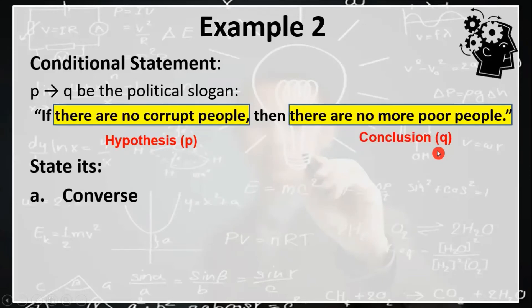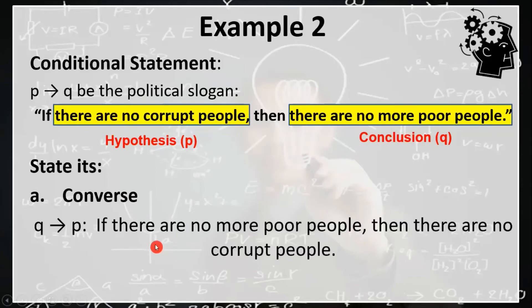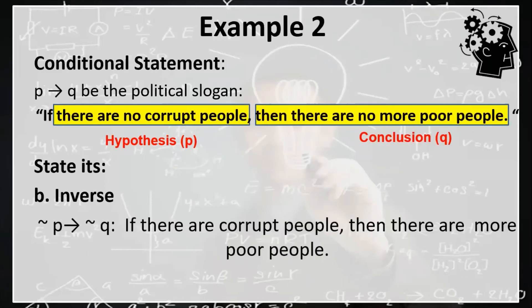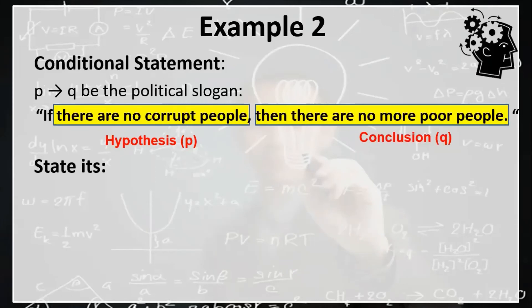Let's state its converse statement, which is just simply interchanging or swapping the role of the hypothesis and conclusion. So our converse statement is: if there are no more poor people, then there are no corrupt people. Let's state its inverse statement, which is created by negating both the hypothesis and conclusion. So our inverse statement is: if there are corrupt people, then there are more poor people.